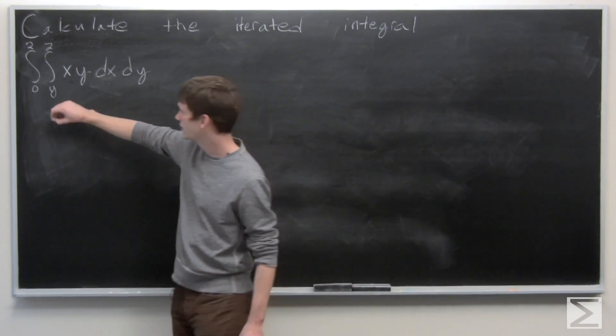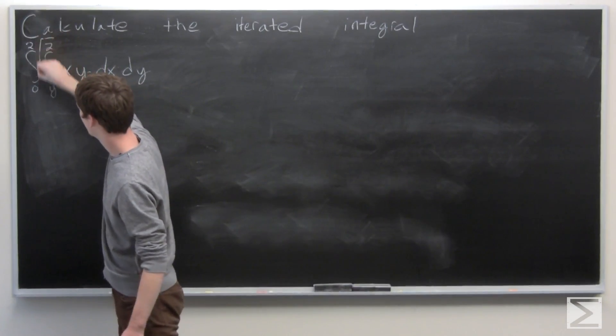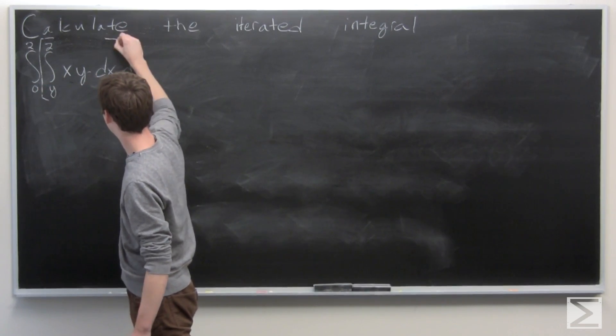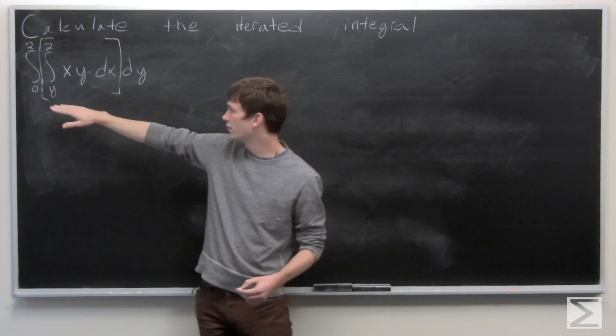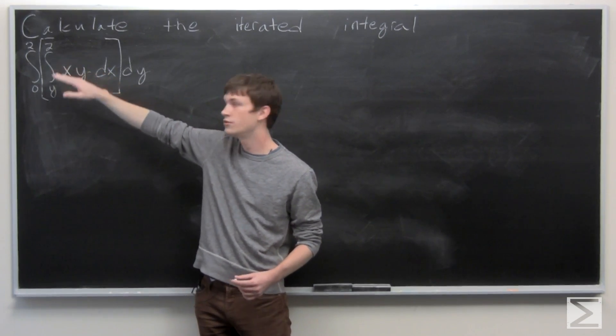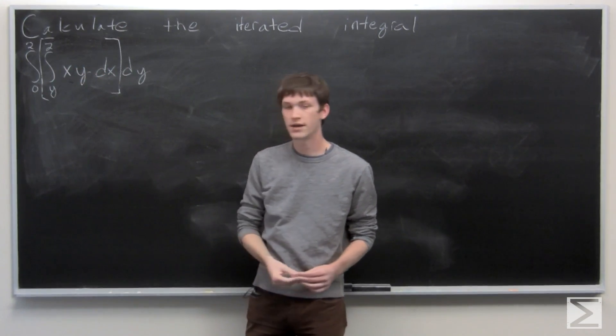So we can split this up into two integrals by putting brackets around the inside. So we have the integral from y to 2 of x times y dx.